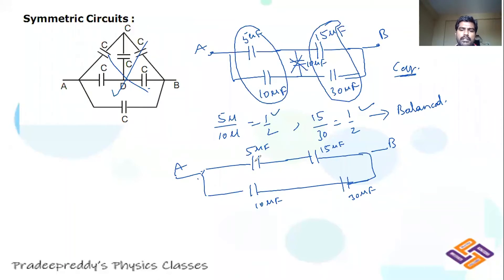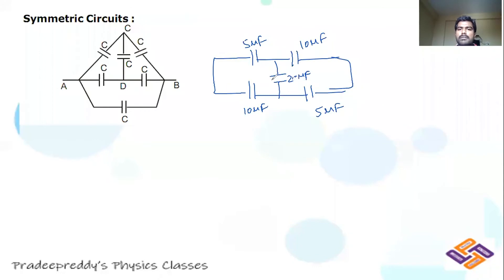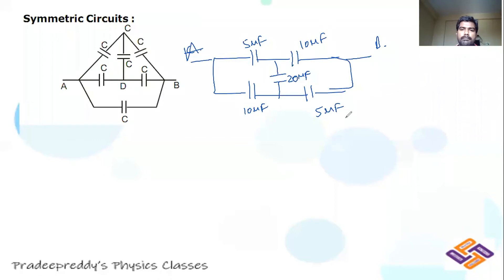Sometimes the bridge may not be balanced. For example, taking the same circuit type with: 5 μF, 10 μF, 10 μF, 5 μF, and 20 μF in the middle. Now check the ratio: 5/10 is not equal to 10/5, so the bridge is not balanced.